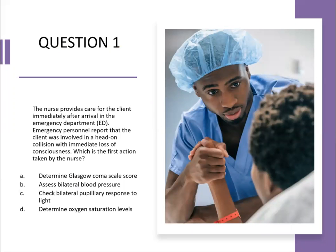You must first determine your topic — in this case, it's clearly loss of consciousness. Then go to step two of the decision tree: assessment versus process versus implementation. If you quickly look at all the answer option choices, you'll see they're all assessment answers, so we cannot eliminate at this point. We need to go to step three, where again all the choices are physical answer choices, so we still cannot eliminate.